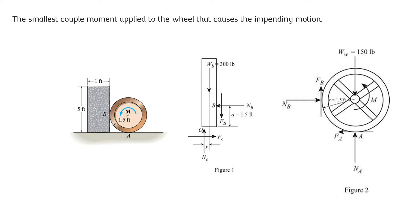As we rotate this disk in anticlockwise direction with a couple moment M, there would be a friction force at point A applied in this direction. The disk wants to rotate in this direction, so the relative motion is in the backward direction at this point. The friction force always opposes the relative motion, so the friction force at point A will be applied in the forward direction. At point B, the friction force is supporting the motion of the ring in the upward direction — the friction force is being applied in the upward direction on this disk.